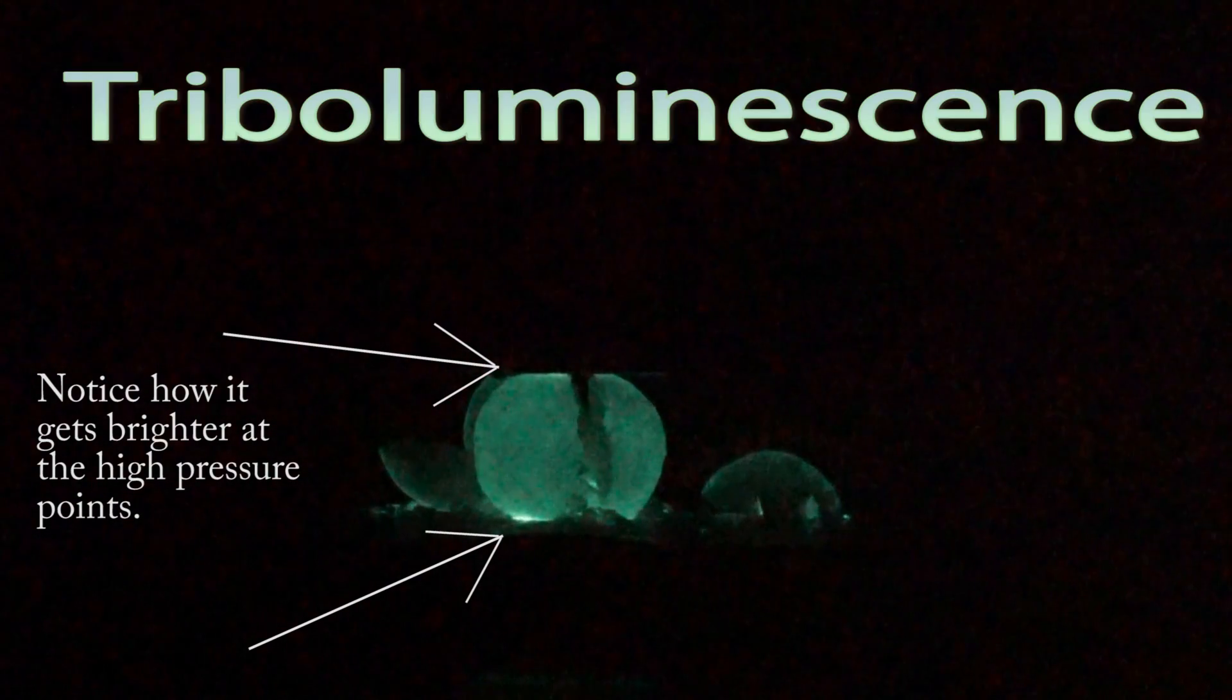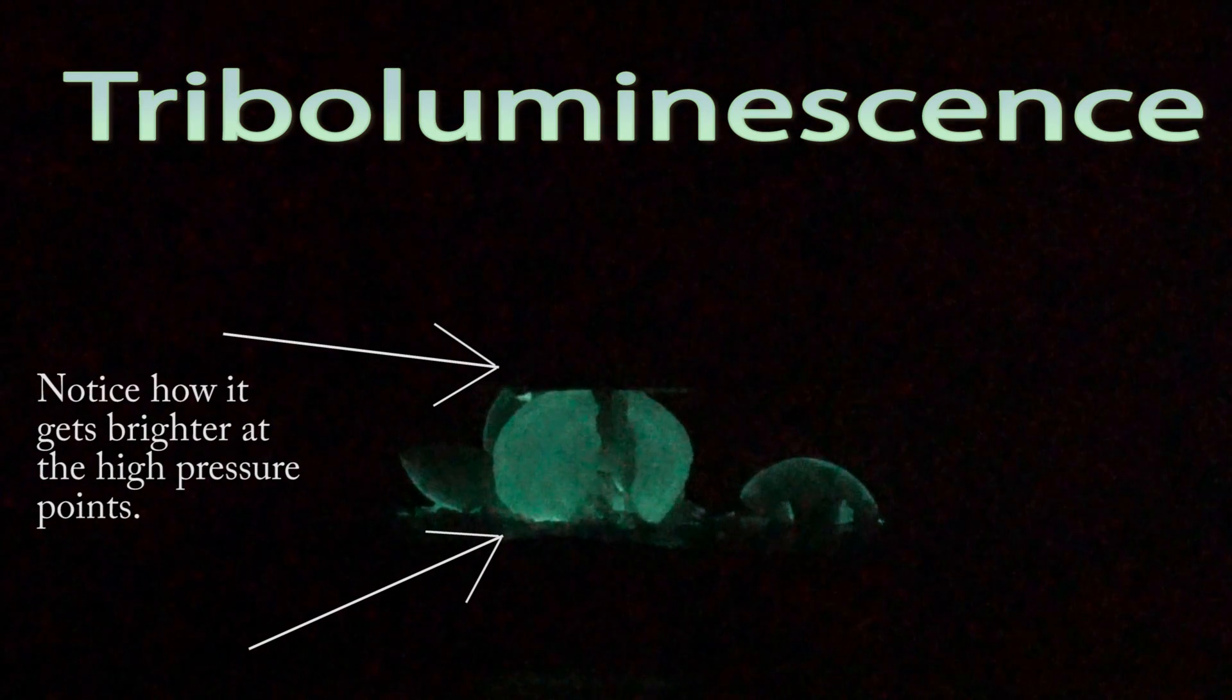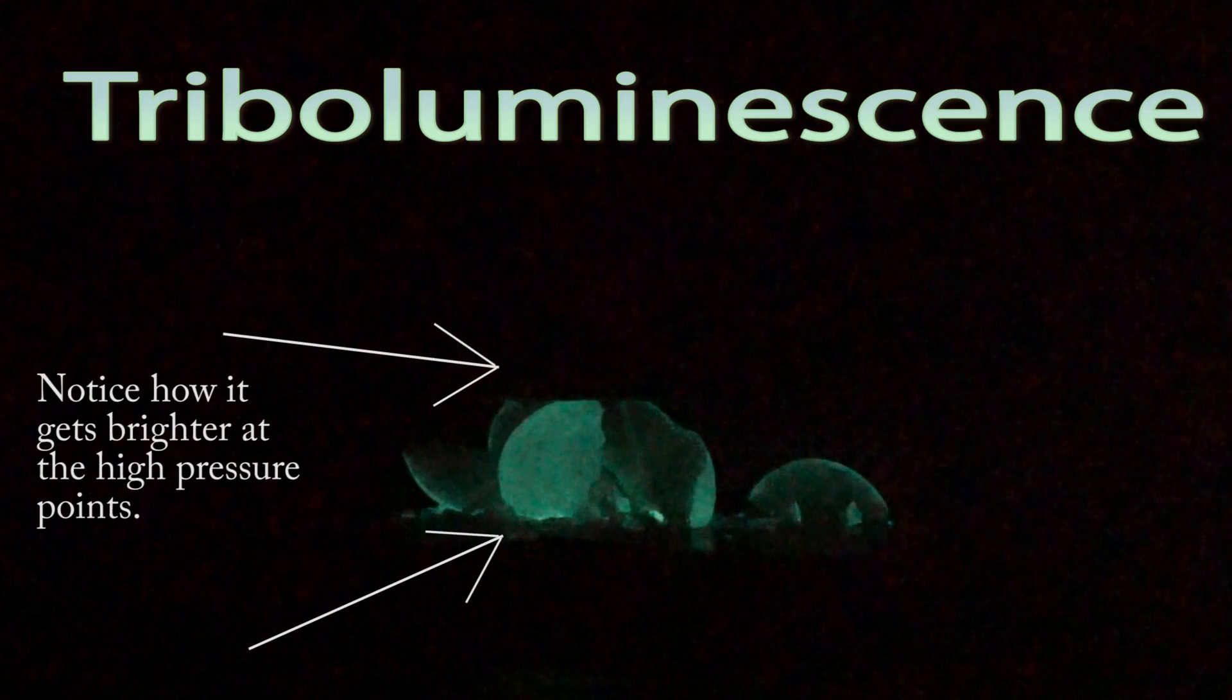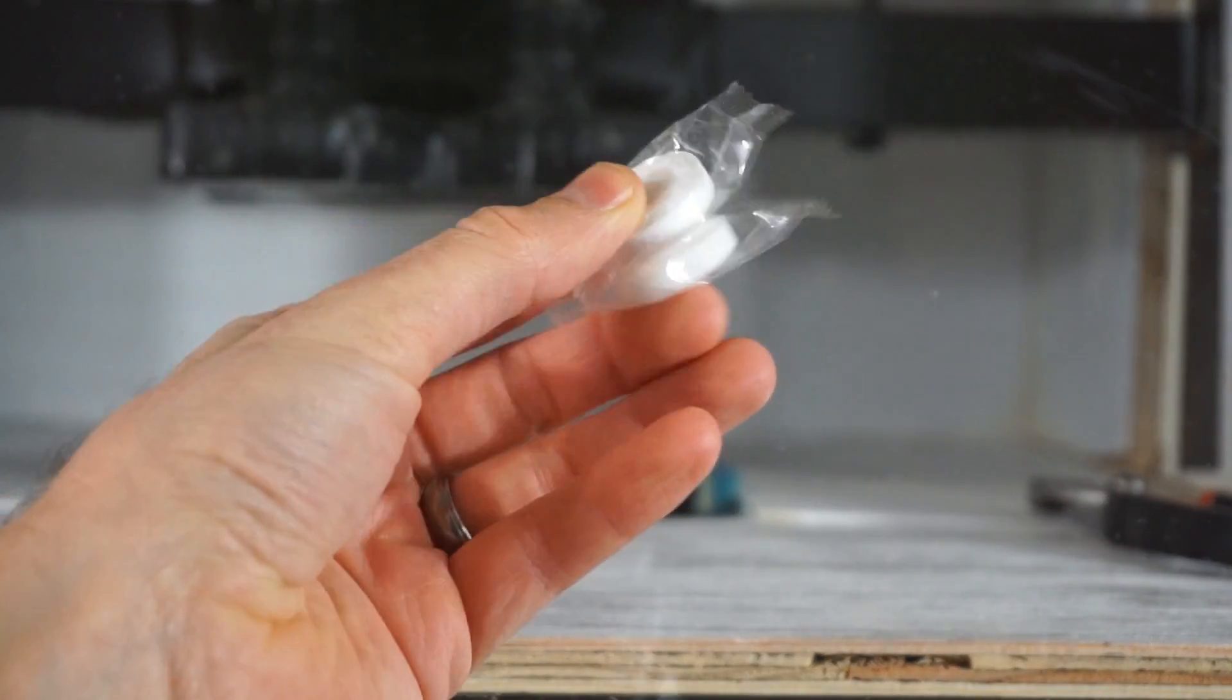So I think this was due to triboluminescence and this happens when crystals are broken in half. One side of the crystal sometimes can have more electrons than the other side and so the electrons jump the gap between them.